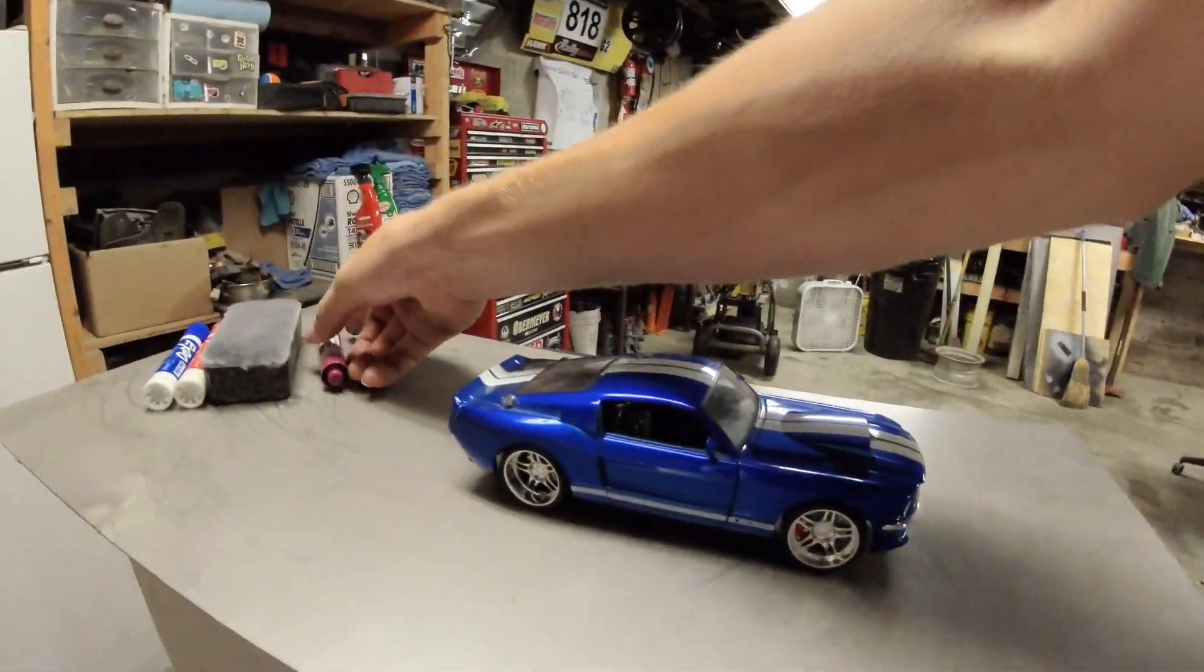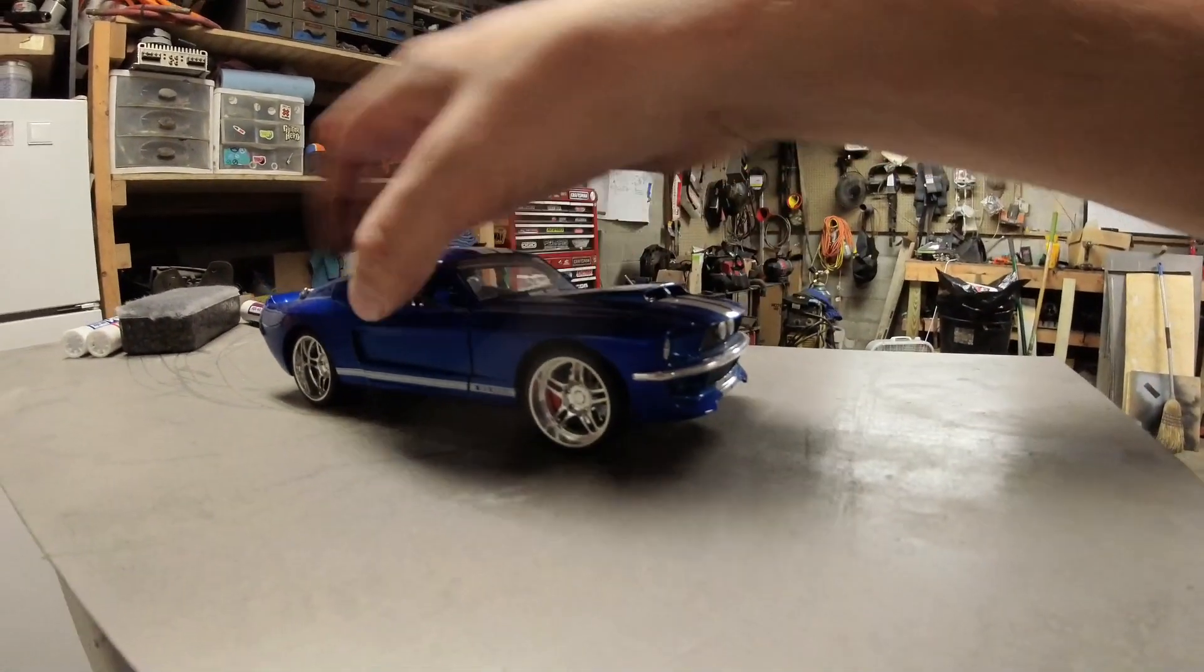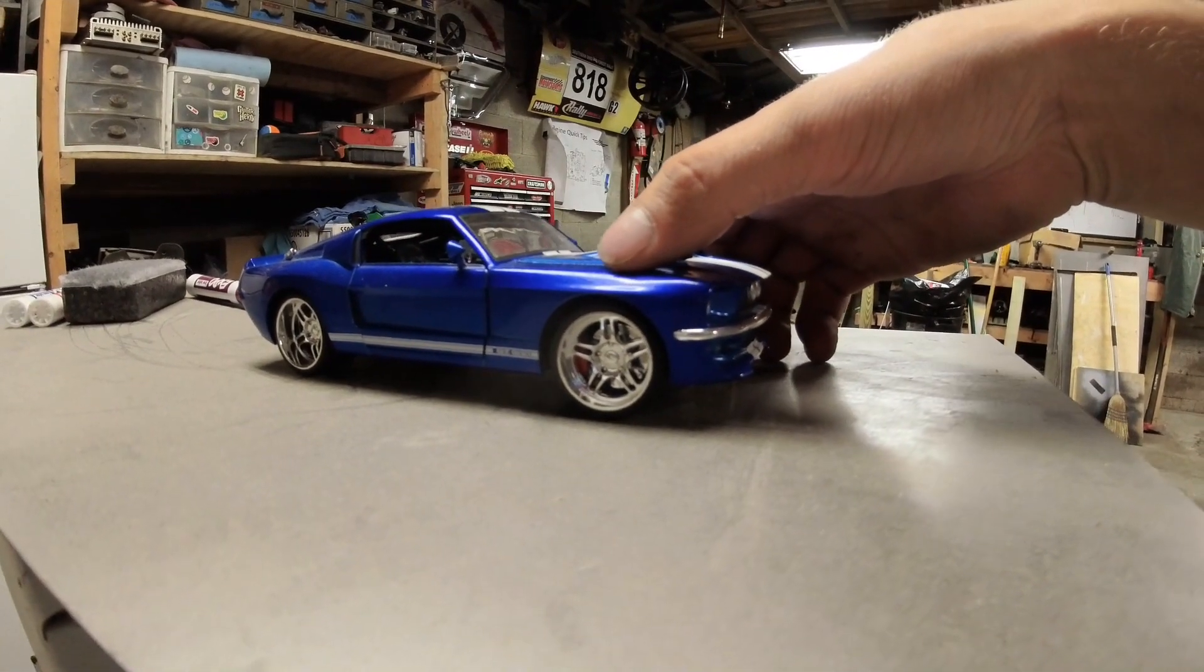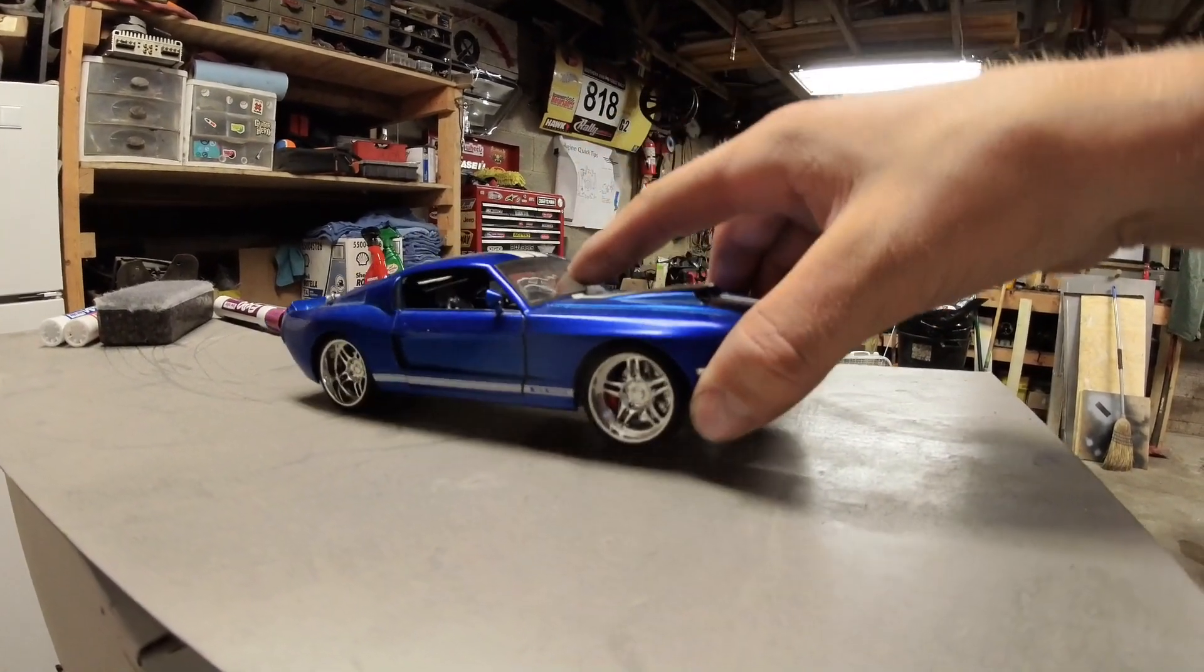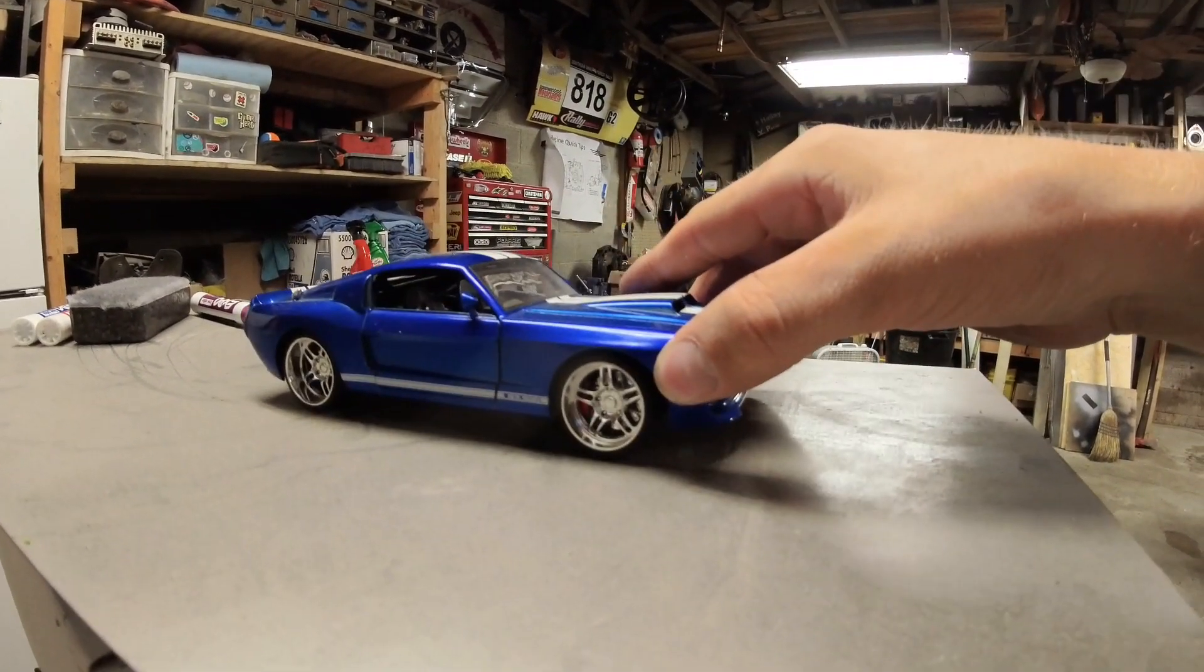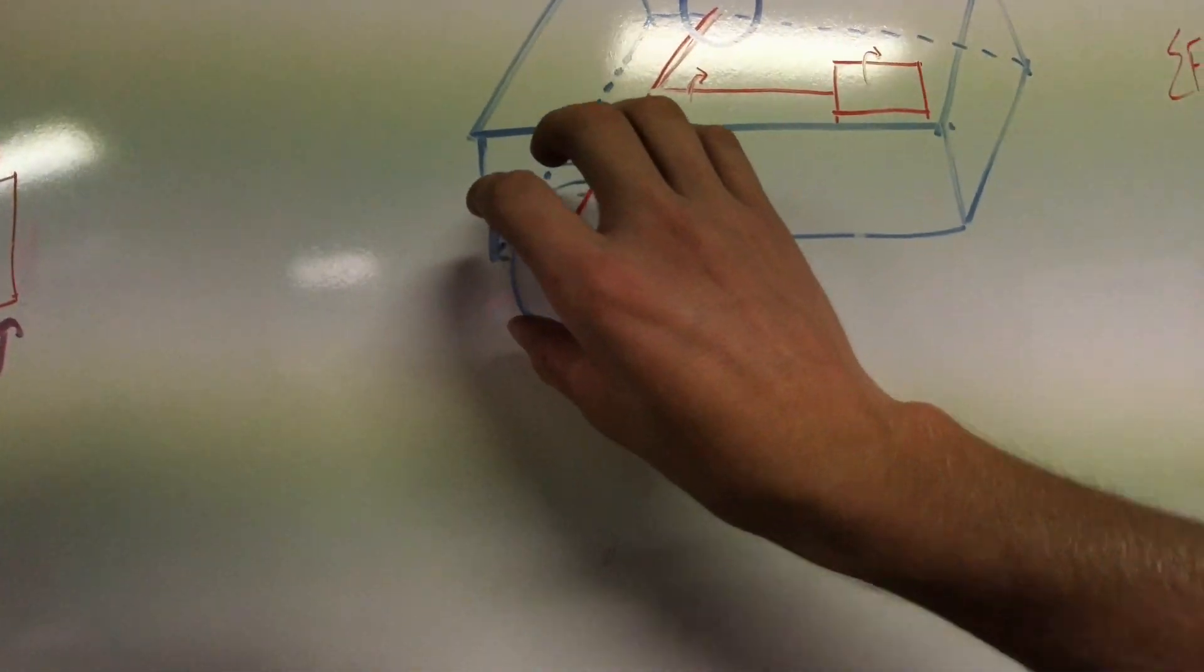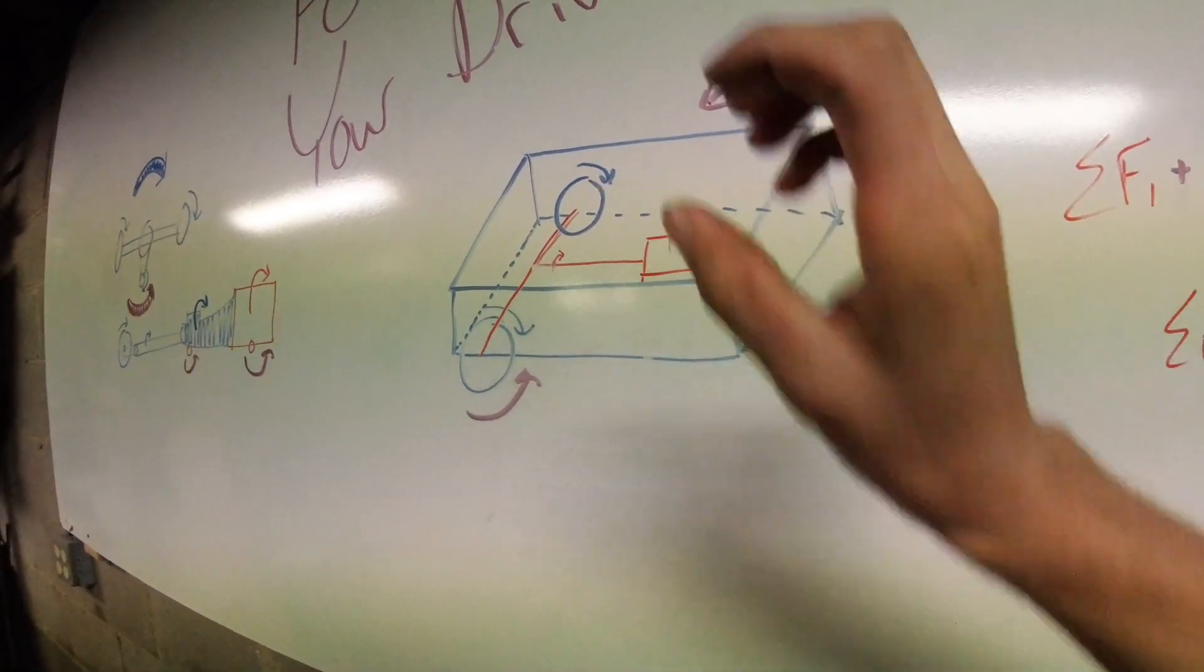So we're going to use Mr. Shelby Mustang over here as a model. When you floor it and you feel your car take off, and the wheel is going to turn, the car is going to go forward. What's also going to happen is you're going to feel your car, if you have soft suspension, is going to load up like this. It's going to put all its weight back into this tire.